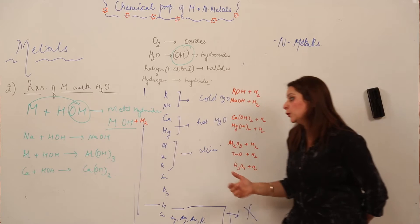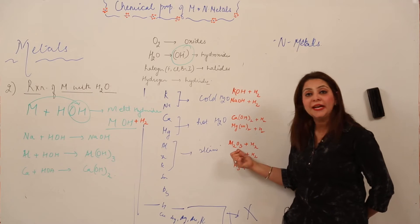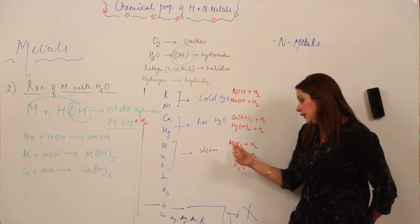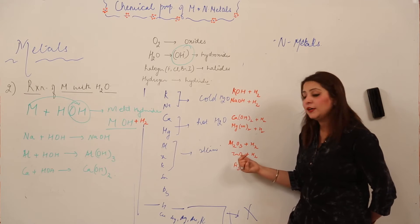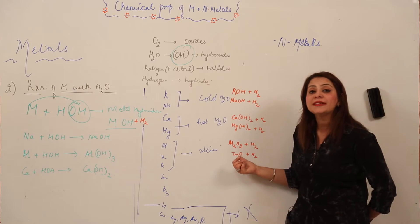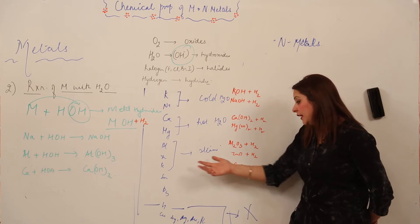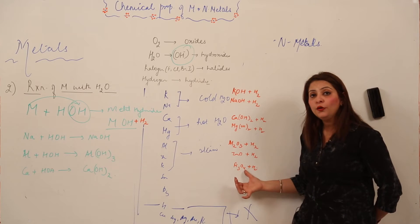Just look at the board: aluminium forms Al2O3 instead of hydroxide. And instead of zinc hydroxide, it is forming ZnO. Even in the case of iron, it is forming Fe3O4.